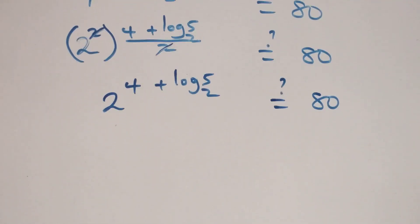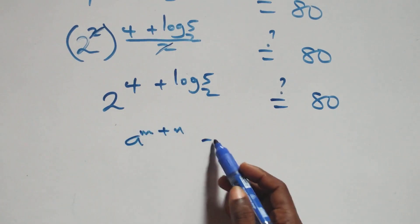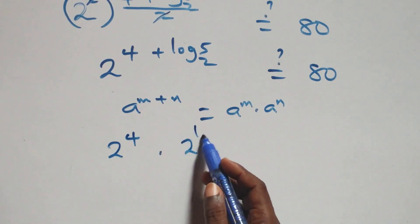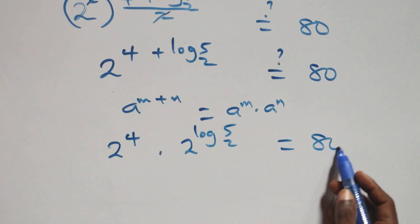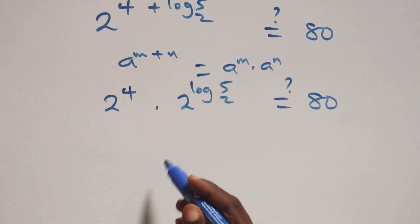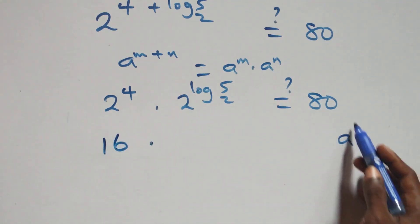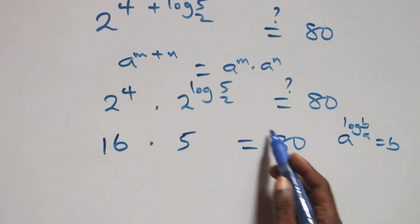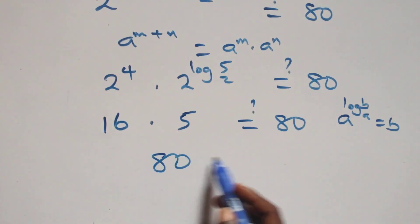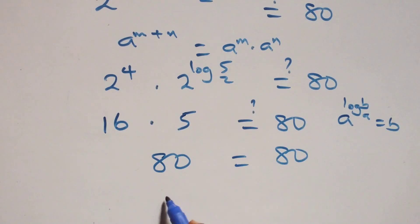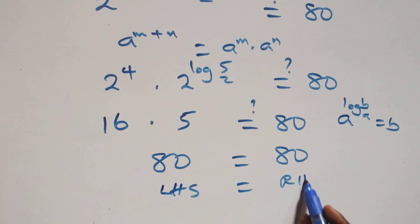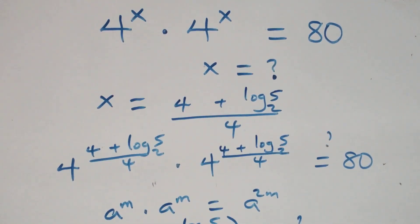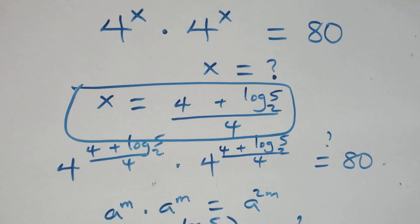Then, when we have a raised to power n plus n, this is the same thing as a raised to power n times a raised to power n. So this becomes 2 raised to power 4 times 2 raised to power log₂5 equals 80. Now 2 raised to power 4 equals 16, and we apply the rule a raised to power log base a of b equals b, so 2 raised to power log₂5 equals 5. Therefore 16 times 5 equals 80, which equals 80. Left-hand side equals right-hand side, and therefore we conclude that x equals (4 plus log₂5)/4 satisfies this given problem.